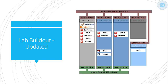Once you complete the Cinder installation, the Cinder service is installed on your controller node, which then provides block storage services to all running instances. Your lab build out after adding Cinder will look like this: the controller node runs MariaDB, RabbitMQ, Keystone, Nova, Neutron, and Glance, along with Cinder.